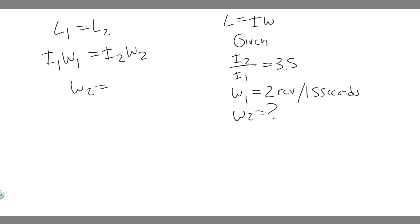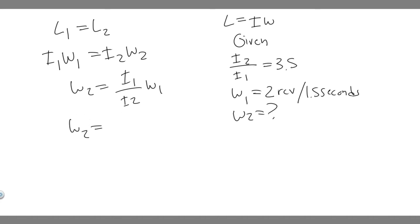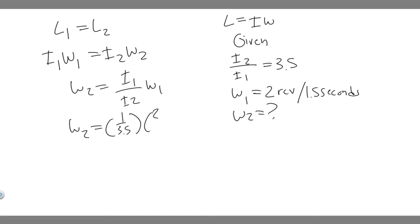We can divide both sides by inertia 2, which cancels it out on one side, giving us omega 2 equals I sub 1 over I sub 2 multiplied by angular velocity 1. Notice that we have I sub 2 over I sub 1 equals 3.5, but this expression is just the inverse — so it's 1 over 3.5. Therefore, omega 2 equals 1 over 3.5, multiplied by omega 1, which is two revolutions per 1.5 seconds.